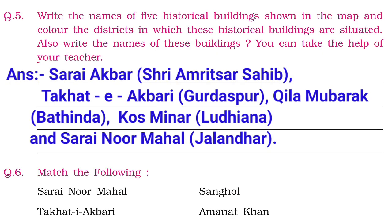Question 5: Write the names of historical buildings shown in the map and color the districts in which these historical buildings are situated. Answer: Sarai Akbar — Amritsar, Takti Akbari — Gurdaspur, Kila Mubarak — Bathinda, Kos Minar — Ludhiana, Noor Mahal — Jalandhar. For matching: Sarai Noor Mahal — Noor Mahal; Takti Akbari — Kalanor.